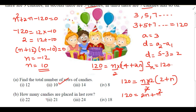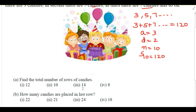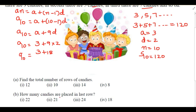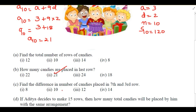Next question: how many candies are placed in the last row? Since there are 10 rows total, we need to find a₁₀. Using the formula aₙ = a + (n-1)d: a₁₀ = 3 + 9×2 = 3 + 18 = 21. So 21 candies are placed in the last row.